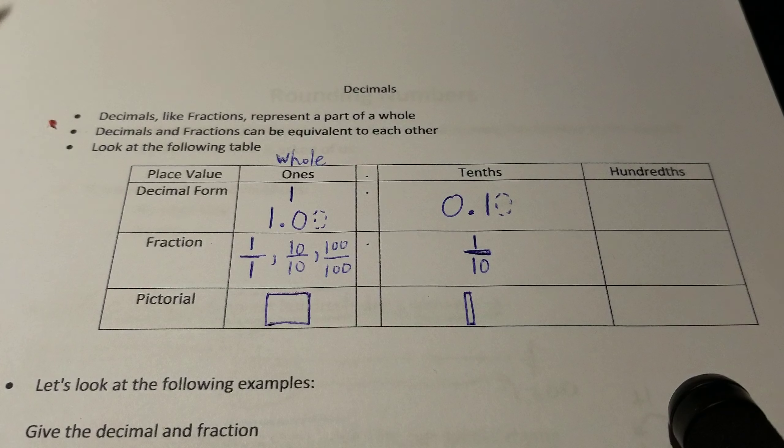And that's how we can represent these here. The decimal version of one-tenth is equivalent to the fraction version of one-tenth, and the base ten rod is the representation for one-tenth. Zero decimal zero one is the decimal version of one-hundredth. One out of a hundred is the fraction version of one-hundredth. And the tiny little cube, the unit, is the pictorial model for one-hundredth.